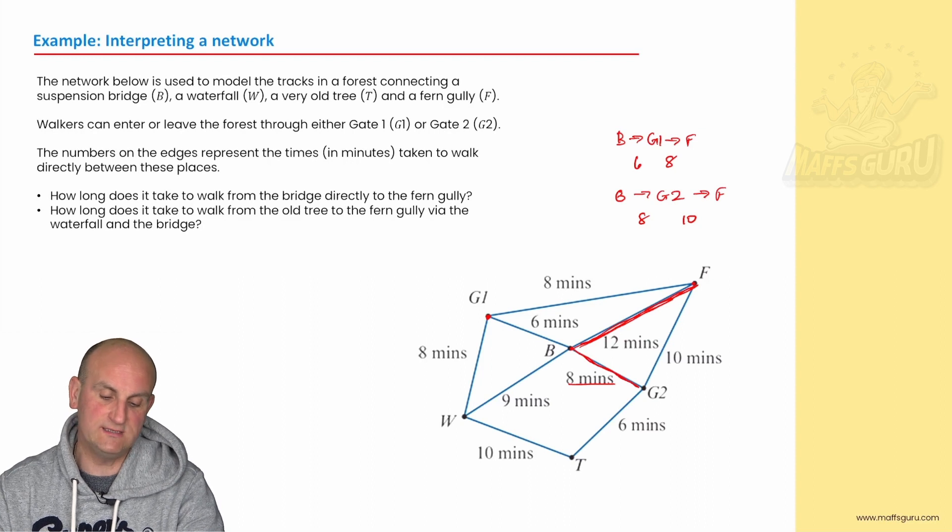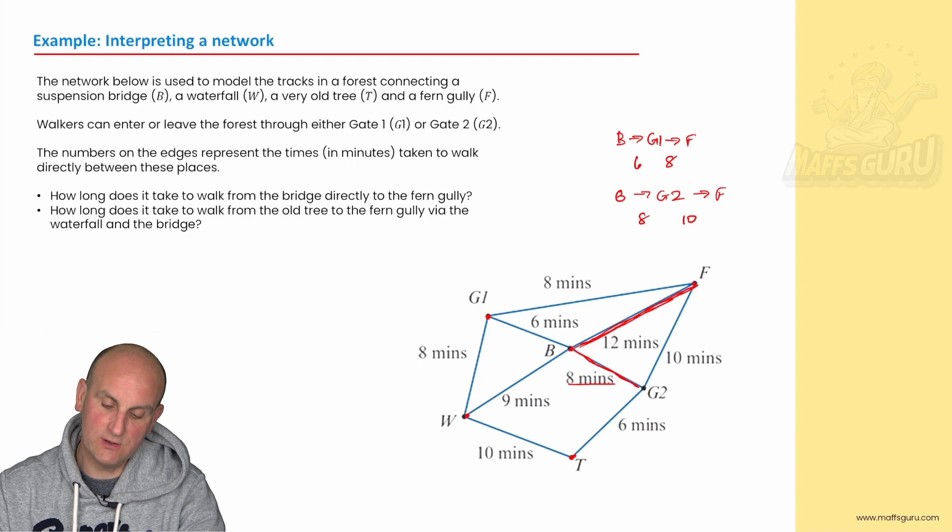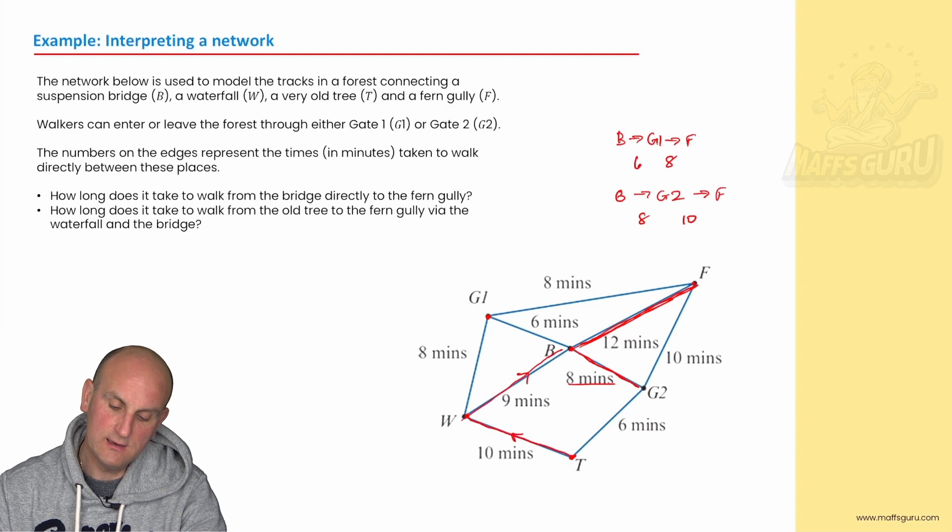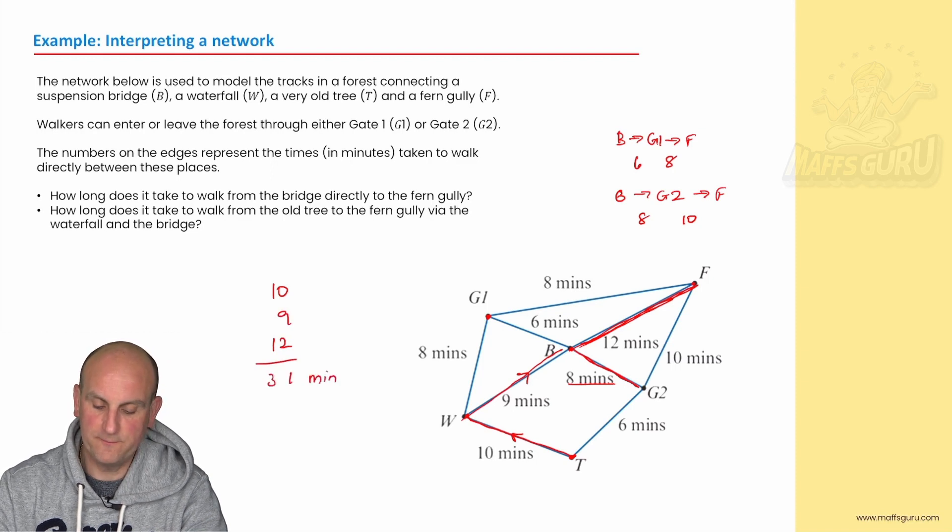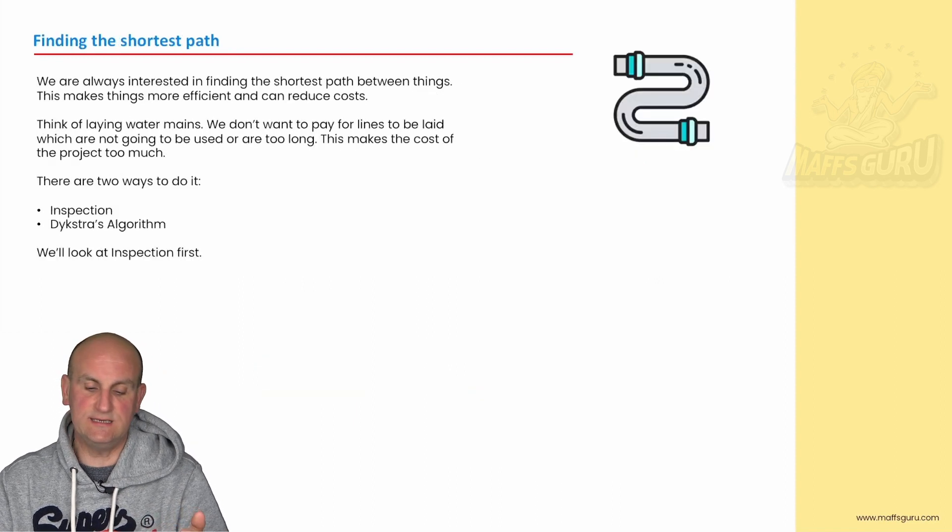So automatically by looking at this graph I'm looking at the shortest path. In that situation directly from B to F is 12 minutes. Let's try another example. How long does it take to walk from the old tree, so there's my old tree, to fern gully via the waterfall and the bridge? So I've got to go the tree to the waterfall, that's one way. The waterfall to the bridge and then the bridge to fern gully. So in that situation I would say 10 minutes to go from the tree to the waterfall, add nine minutes from the waterfall to the bridge and 12 minutes to fern gully. Add those together gives me 31 minutes.